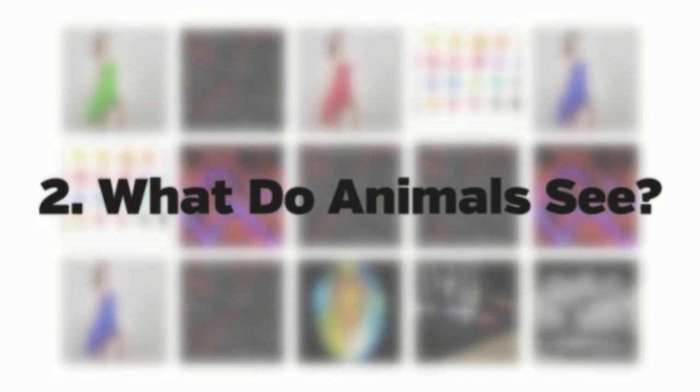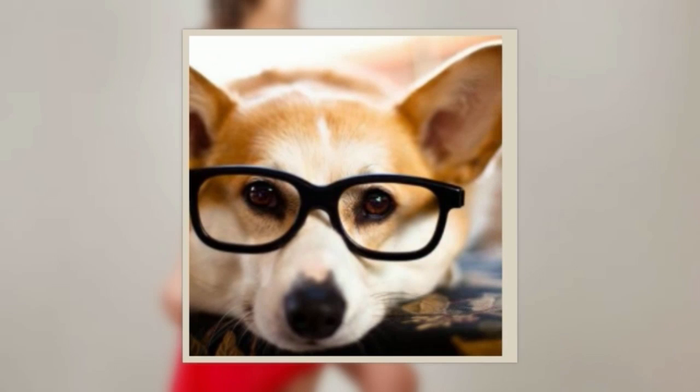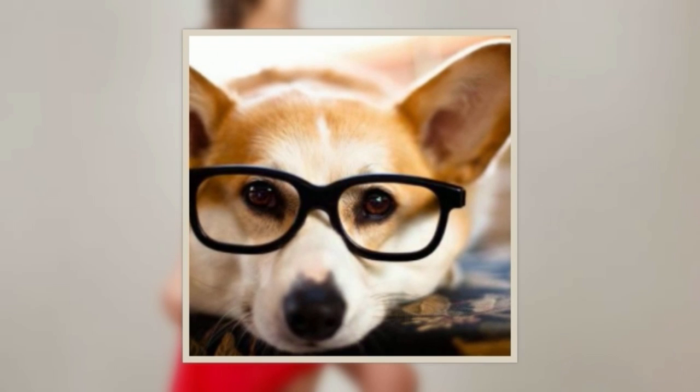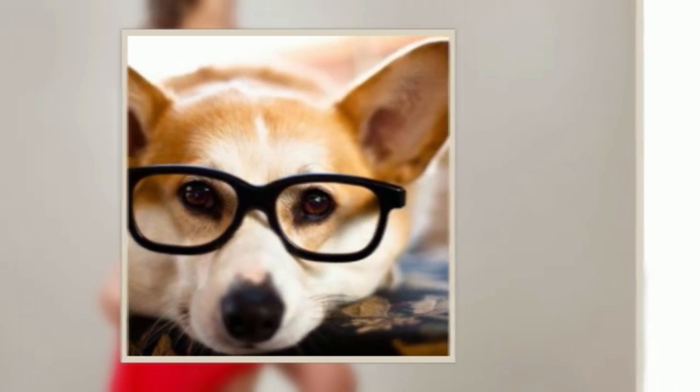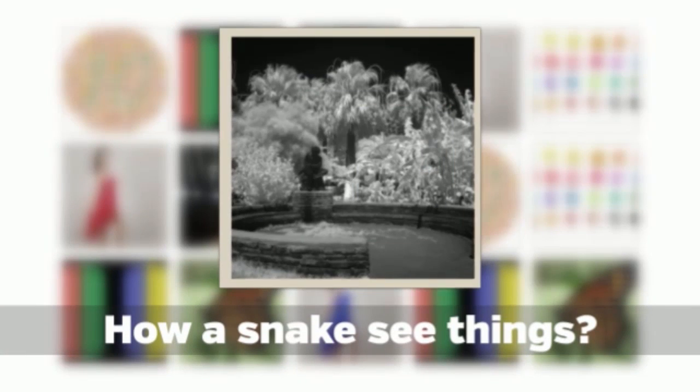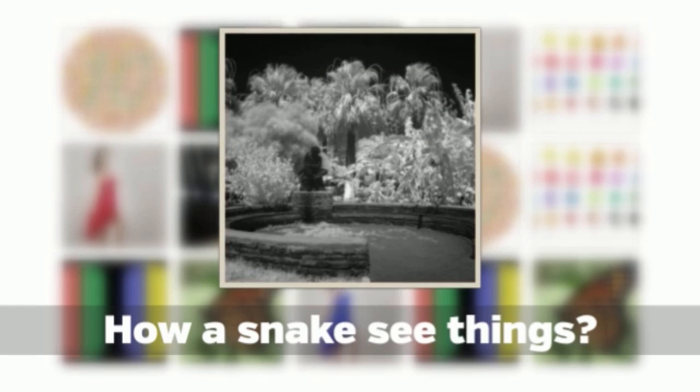2. What do animals see? We've all heard that dogs are colorblind and that bats are completely blind, but that's not entirely true. Bats can see just not well, while dogs are only colorblind from our perspective. We have three color receptors, while dogs only have two. They can't see red. Would a squid that can only see in blue consider a dog colorblind? Snakes can see very little normal colors, but can see in infrared, while bees can see blue, yellow, and ultraviolet.